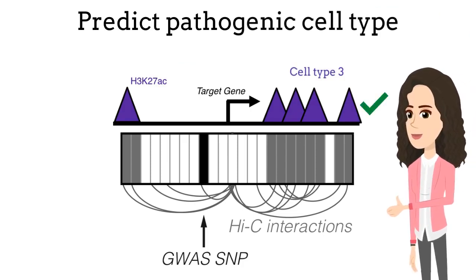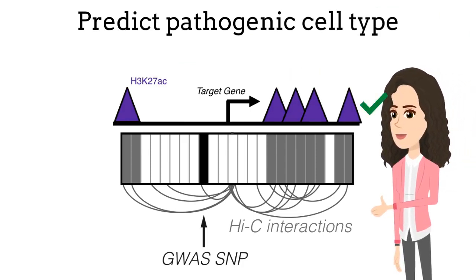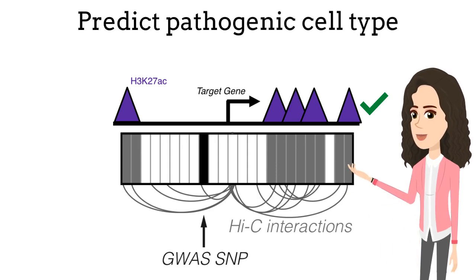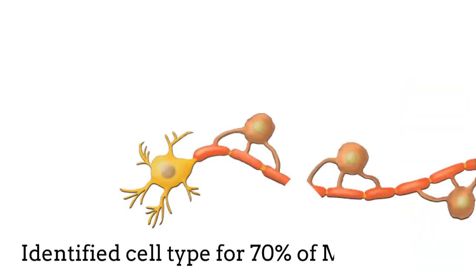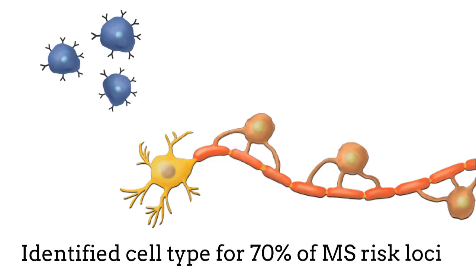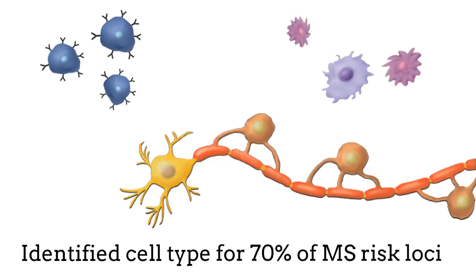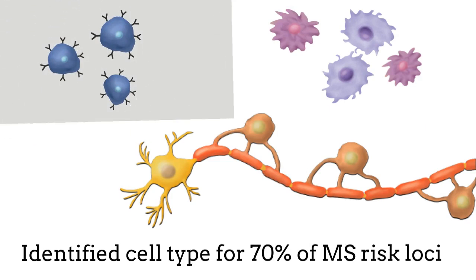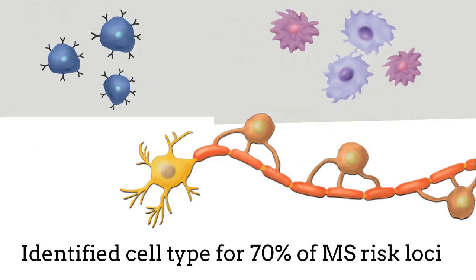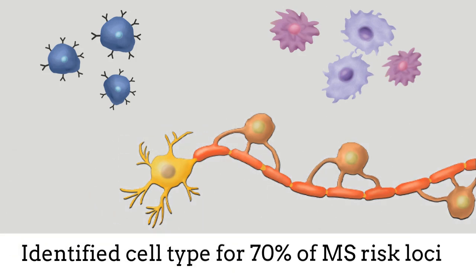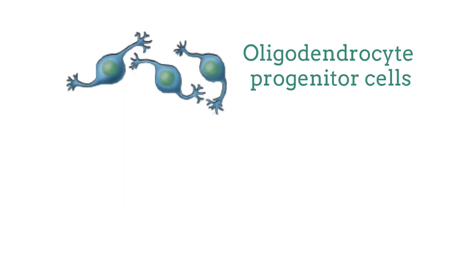This allows us to predict the cell types that are pathogenically altered by the disease-associated variants. We applied this approach to MS and identified the pathogenic cell type for 70% of risk loci. The majority were predicted to impact the function of T cells, but we also identified loci that alter the function of myeloid and central nervous system cell types.